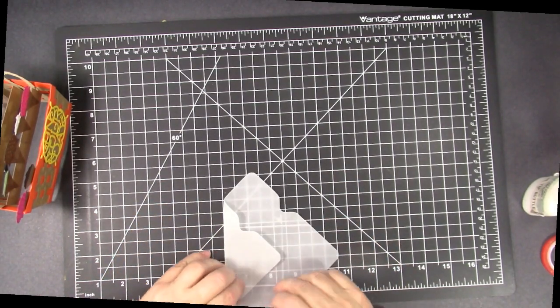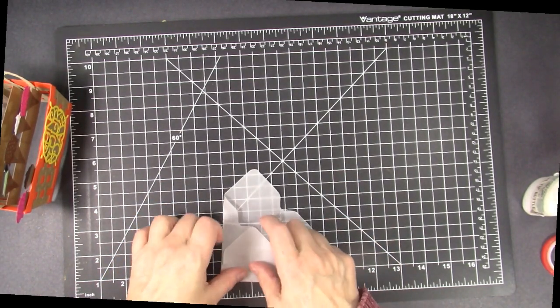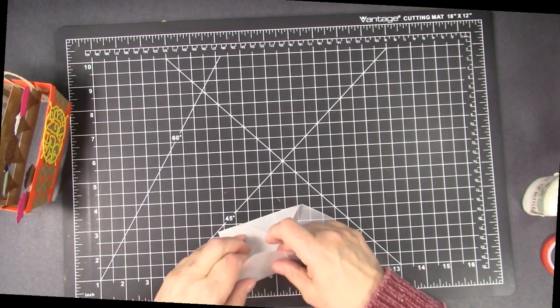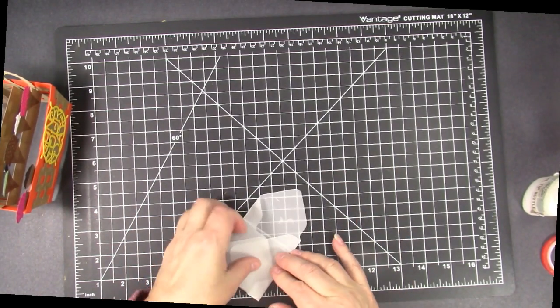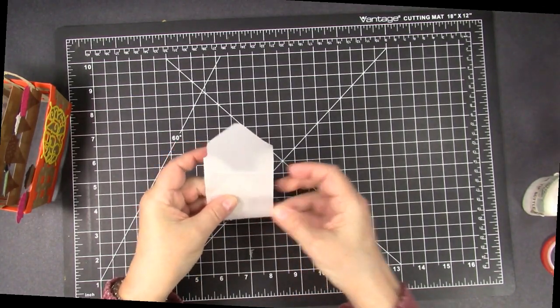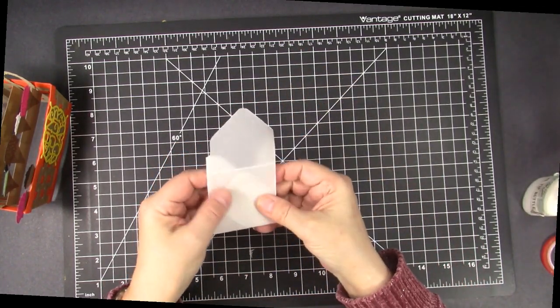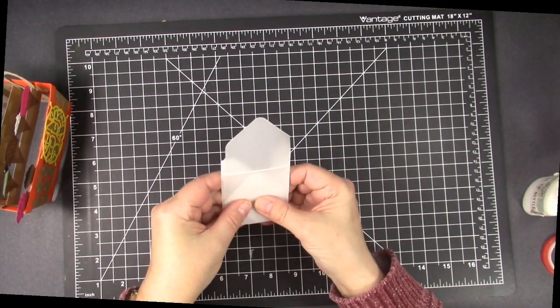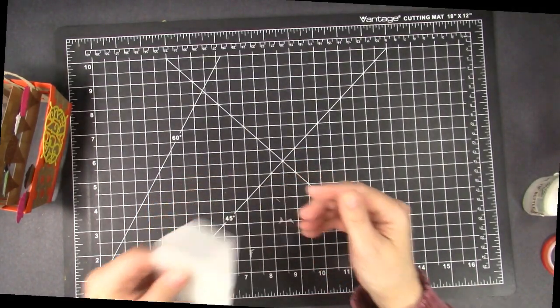So if you just fold on the score lines you have a neat little envelope. I did that fast so it's not straight. And then I just slipped the gift card in there and of course you can see that because I made it out of vellum.